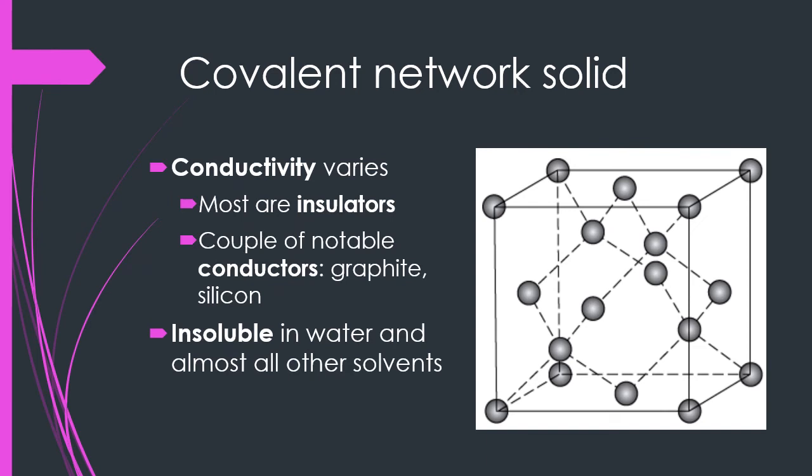The conductivity of covalent network solids varies. The vast majority act as insulators. However, there are a couple of notable exceptions — ones that are conductors, though generally not excellent conductors. That would be graphite, a form of carbon where carbon is arranged in sheets that are parallel to each other. There is some space for movement of electrons between the parallel layers, and that allows it to be conductive.